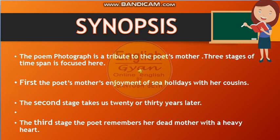First, the synopsis. The poem 'A Photograph' is a tribute to the poet's mother. There are three stages of time span focused here: first, the poet's mother's enjoyment of past sea holidays with her cousins; second, a stage set 20 or 30 years later; and third, the poet remembers her dead mother with a heavy heart.